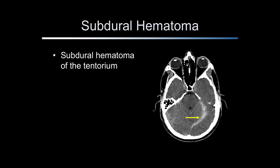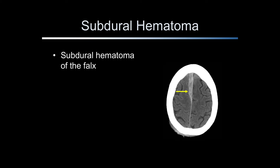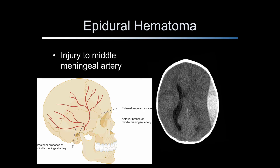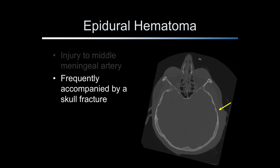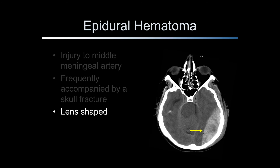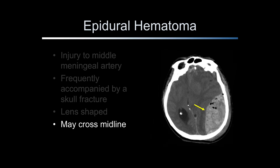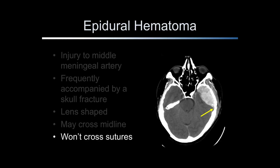Subdural blood can also collect along the tentorium, and can accumulate along the falx. The falx is a thin layer of dura that lies in the interhemispheric fissure. A subdural hematoma along the falx will appear as a hyperdense structure that is frequently asymmetric. Epidural hematomas are typically arterial in origin and most commonly occur from injury to the middle meningeal artery and its branches. They are frequently accompanied by a skull fracture. They are biconvex or lens-shaped and may cross the midline, but do not cross suture lines.